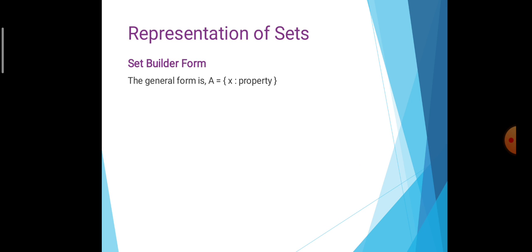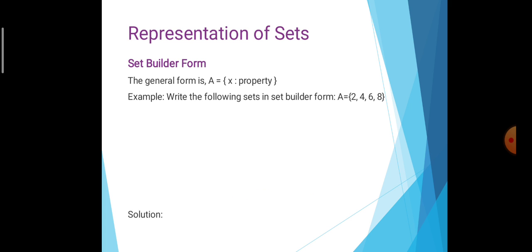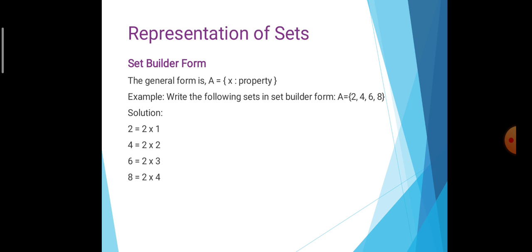Next: set builder form. In set builder form, the general form is A = {x | property of x}. There is a certain rule or property in set builder form. For example, write the following set in set builder form: A = {2, 4, 6, 8}. Observe: 2 = 2×1, 4 = 2×2, 6 = 2×3, 8 = 2×4. There is a particular property. So the set builder form is A = {x : x = 2n, n ∈ ℕ, 1 ≤ n ≤ 4}.